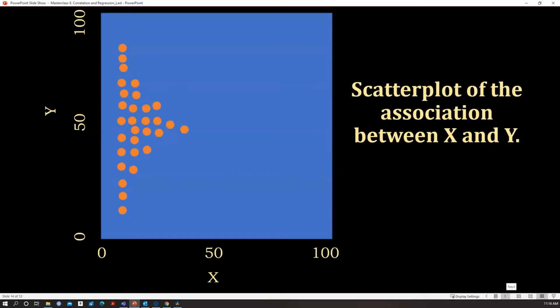Let's consider that we measured a group of participants, 30 participants, in variable Y, which could be, let's say, their intelligence measured with some scale that goes from 0 to 100. And now we measure them in another variable, which is, let's say, working memory capacity. And we obtain this scatterplot.